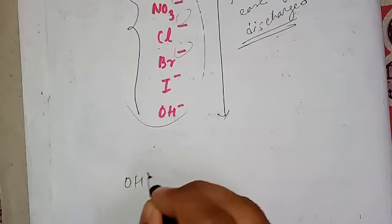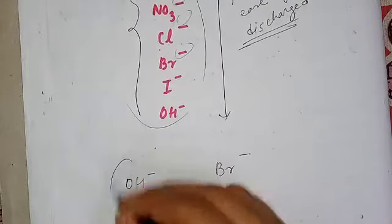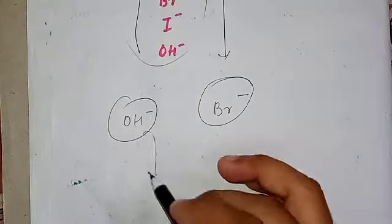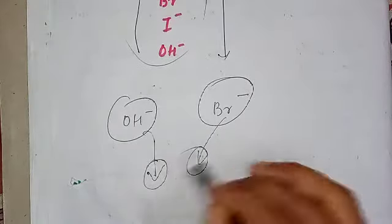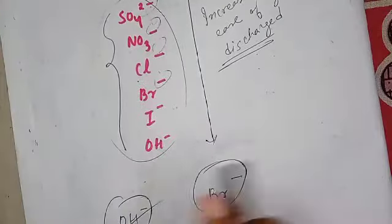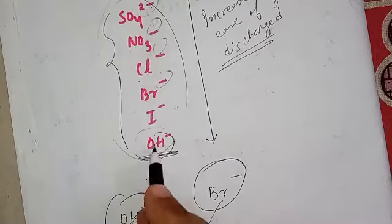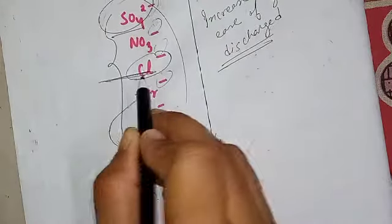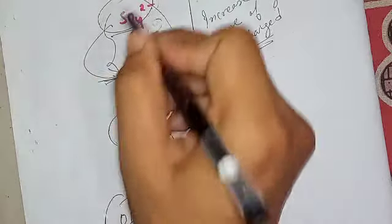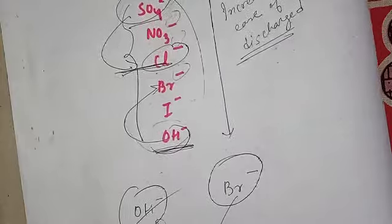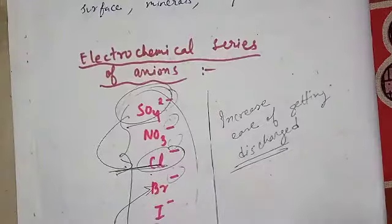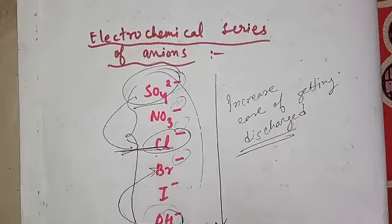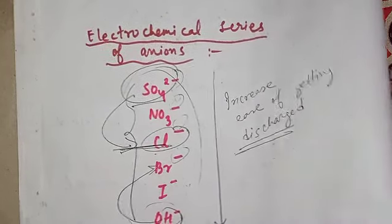For example, comparing OH⁻ and Br⁻: OH⁻ will get discharged more easily because it is placed below bromine in the list. Similarly, comparing SO4²⁻ and Cl⁻, chloride will get discharged more easily than sulfate. That is essentially what the electrochemical series of anions looks like.